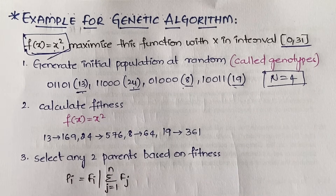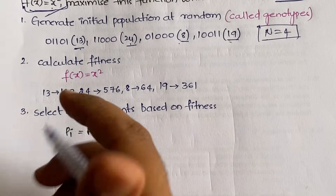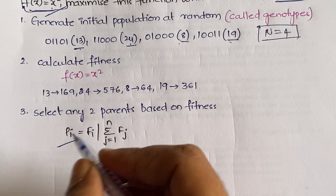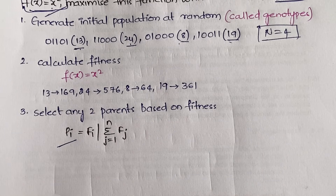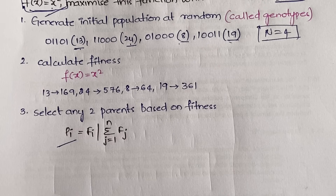You need to select two parents based on fitness, so you calculate the fitness of the parents first. The formula is: pi (fitness of the parent) = fi divided by the sum Σ(j=1 to n) f(j). Here i refers to the current string — whether 13, 24, 8, or 19 — and j refers to the remaining ones. I've constructed a tabular form to make this clearer.